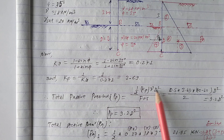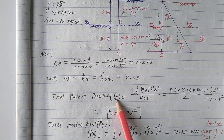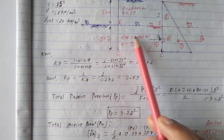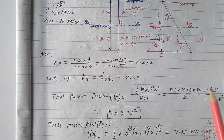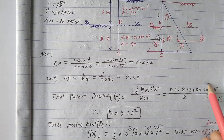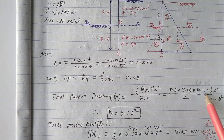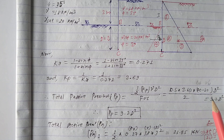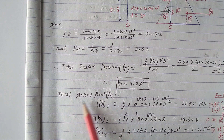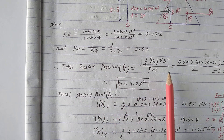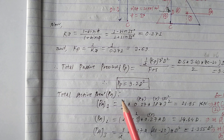The Kp value is 3.69. Since the water table is at the bottom of excavation, we use the submerged unit weight: γ' = γsat − γwater = 20 − 10 = 10 kN/m³. So the passive pressure becomes PP = 9.2d².